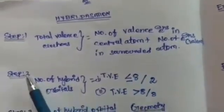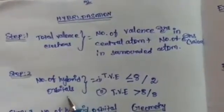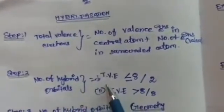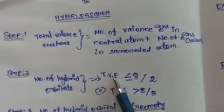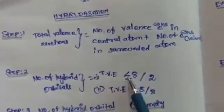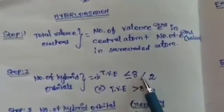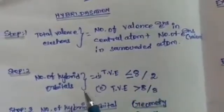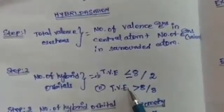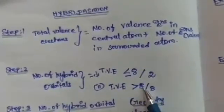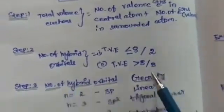Step 2: find the number of hybrid orbitals. Case 1 — if the total valence electrons are less than or equal to 8, divide by 2. Case 2 — if the total valence electrons are greater than 8, divide by 8.